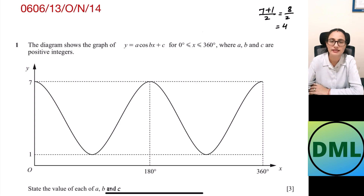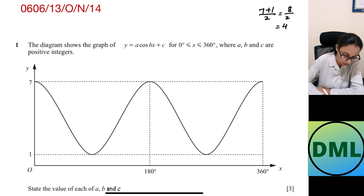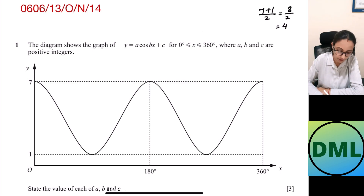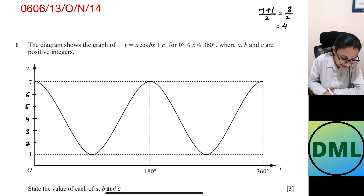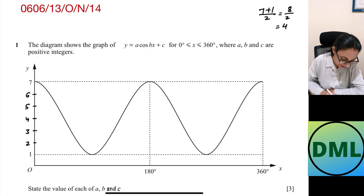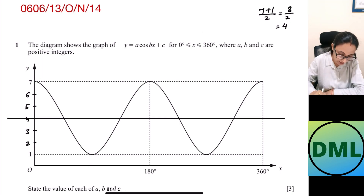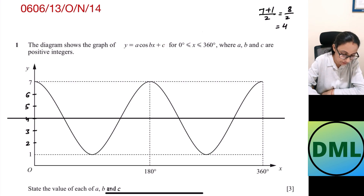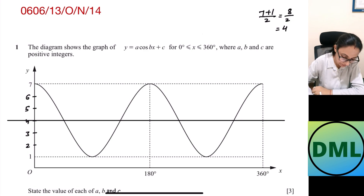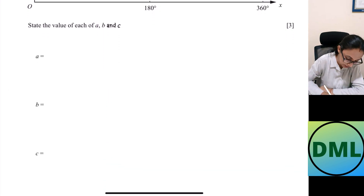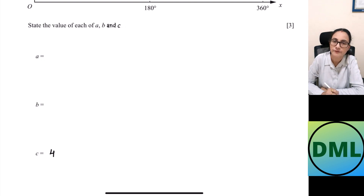I need to plot all values between 1 and 7: 2, 3, 4, 5, 6, 7. My axis is at 4. The axis is the c value, so the value for c is 4.